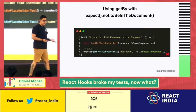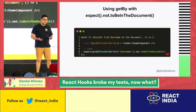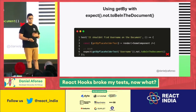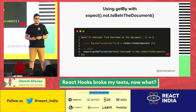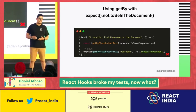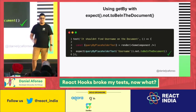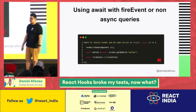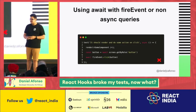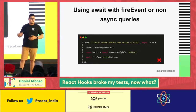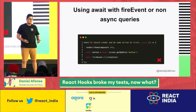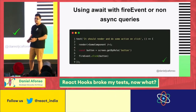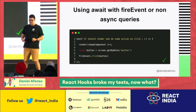Another mistake: using getBy with expect not to be in the document. GetBy throws an error when it doesn't find what it's looking for, and expect not to be in the document asserts the thing doesn't exist on the DOM — so this test will always fail. Instead, use the queryBy variant, which returns null when it doesn't find what it's looking for. Also, avoid using waitFor with fireEvent or non-asynchronous queries — these are synchronous, so just remove the wait and only use waitFor with findBy variants or asynchronous utilities.